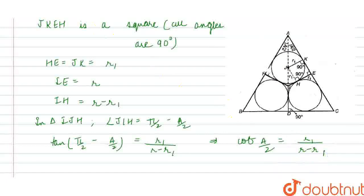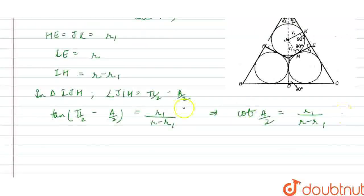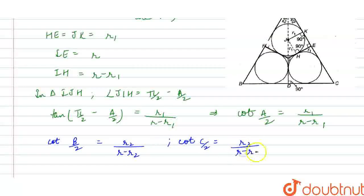Now proceeding forward, if cot(A/2) has this value, then similarly we can say that cot(B/2) would equal R2/(R-R2), and similarly cot(C/2) would equal R3/(R-R3).